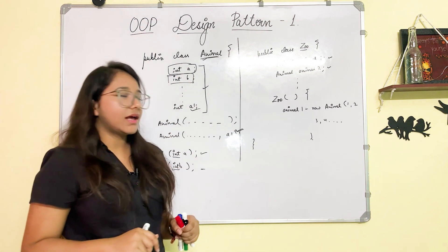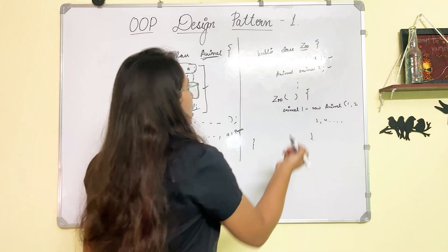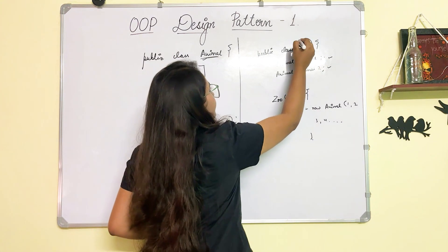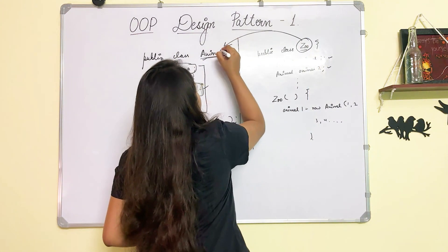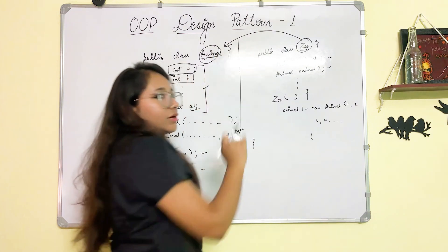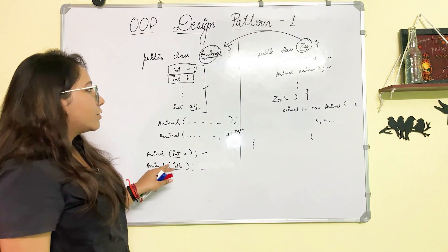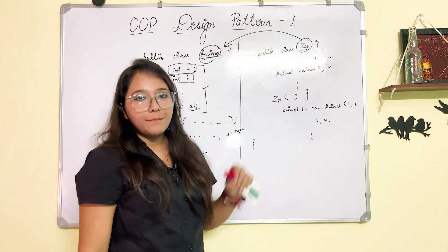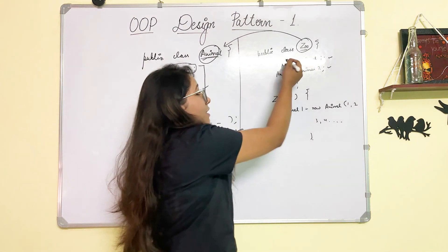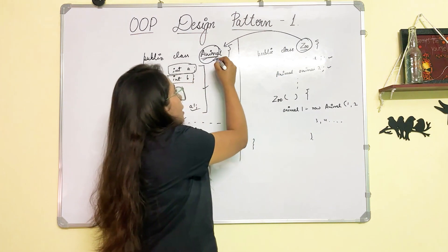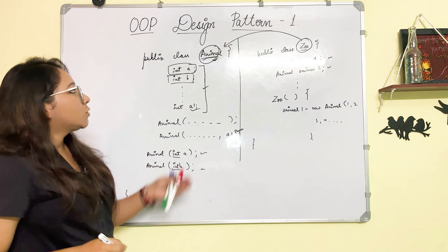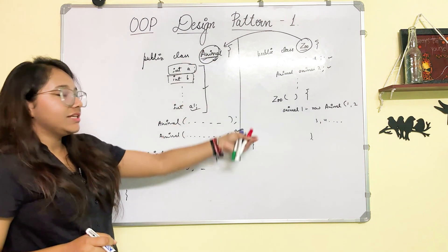This is what we call a design problem. Basically, what happened? Your Zoo class and your Animal class will be tightly coupled. Whatever you change here, the other classes will also be impacted. Now, similarly, there can be a lot of classes in which you have used Animal class. So you have to go to every place and make these changes.